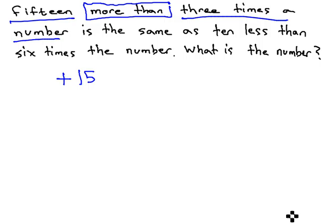Three times a number. We don't know the number, so we'll take three times the unknown number, n, or any variable you choose to use.